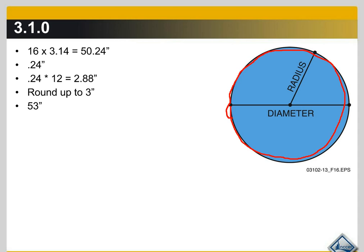So that's the formula: it is the diameter times pi, 3.141, and then you come up with your inches. It's going to give you a decimal and you just convert that decimal by multiplying by 12 and then just round up.